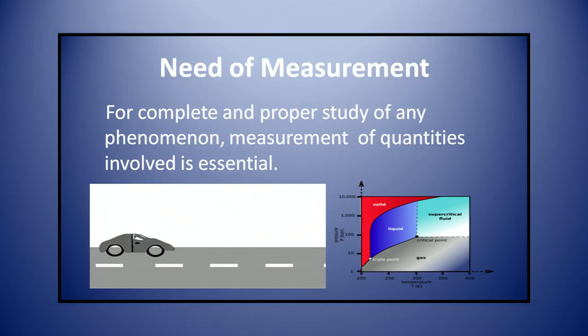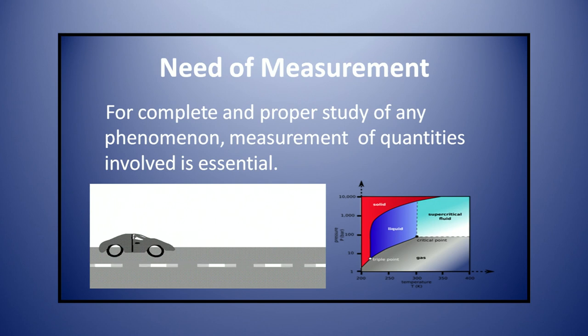Here, you can see that a car is moving on the road. If you want to express its velocity, then you have to measure how much distance it has covered in how much time. So you need measurement for that. Now, how will we express any measurement? We will discuss unit of measurement.